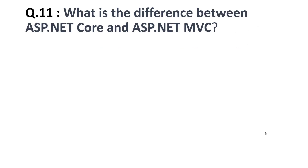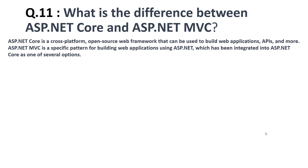The eleventh question is: what is the difference between ASP.NET Core and ASP.NET MVC? ASP.NET Core is a cross-platform, open source web framework that can be used to build web applications, APIs, and more. ASP.NET MVC is a specific pattern for building web applications using ASP.NET, which has been integrated into ASP.NET Core as one of several options.